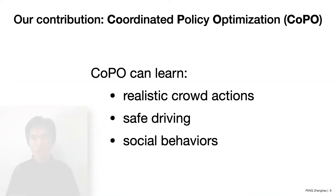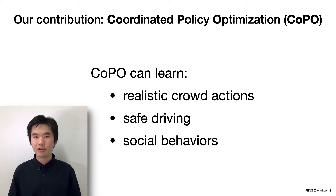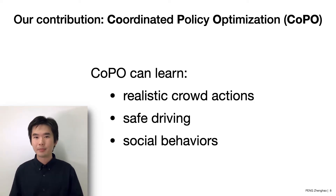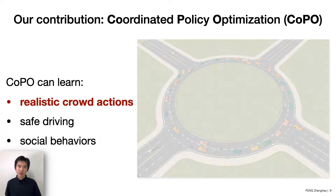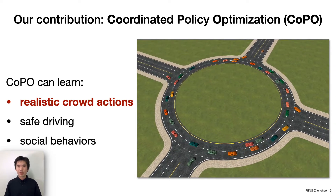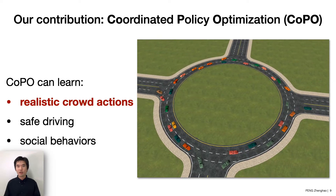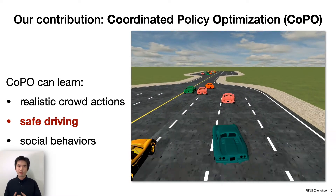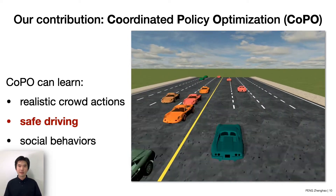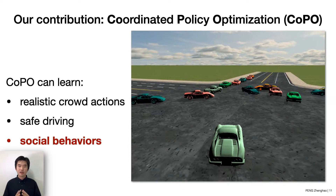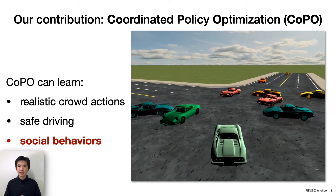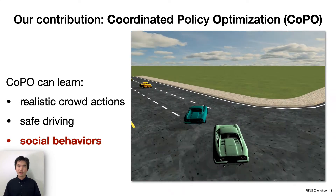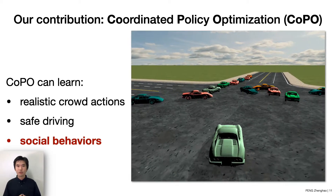To tackle these challenges, we propose Coordinated Policy Optimization, a novel MARL method, short for CoPO. CoPO can facilitate bi-level optimization to optimize the population to achieve social behavior efficiently. CoPO agents can learn realistic crowd actions — in the roundabout environment, a large scale of RL agents exhibit coordinated behaviors. CoPO can also learn safe driving, such as yielding in the bottleneck environment, and social behaviors such as negotiation in a challenging unprotected intersection environment.